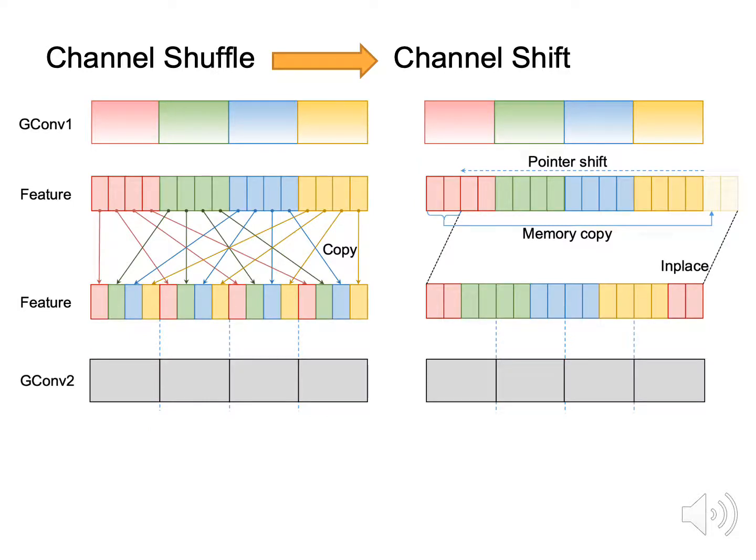The channel shuffle operation in ShuffleNet is adopted to fuse features among different groups. As illustrated in the left panel, channel shuffle is time-consuming since it requires moving feature maps to another memory space. In contrast, shifting the pointer of the physical address to load data is free. The channel-shift primitives blend the information in adjacent channels by shifting all the channels along a certain direction, showing in the right panel.